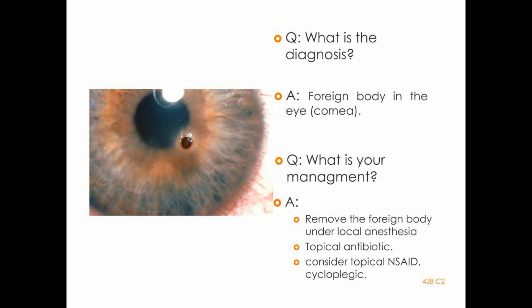Look at the picture and answer the questions — this is a corneal foreign body; that is your diagnosis. How will you manage this case? Remove the foreign body with the help of a 26-gauge needle, then start the patient on topical antibiotics, give cycloplegics such as cyclopentolate, and for pain you can also give anti-inflammatory medications.